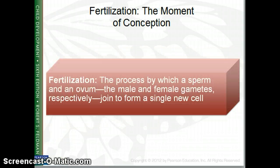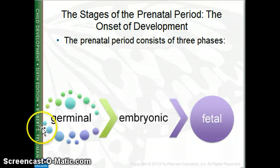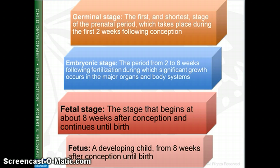The three stages of prenatal development are the germinal stage, the embryonic stage, and the fetal stage. The germinal stage covers about the first two weeks following conception, when the sperm and egg join, travel to the uterus, and implant to continue growing. The embryonic stage runs from about two weeks to about two months, when many of the major organs start to develop. From two months until birth is considered the fetal stage.